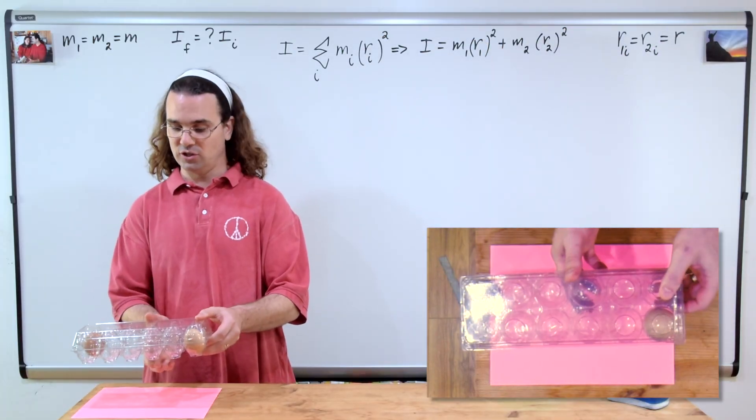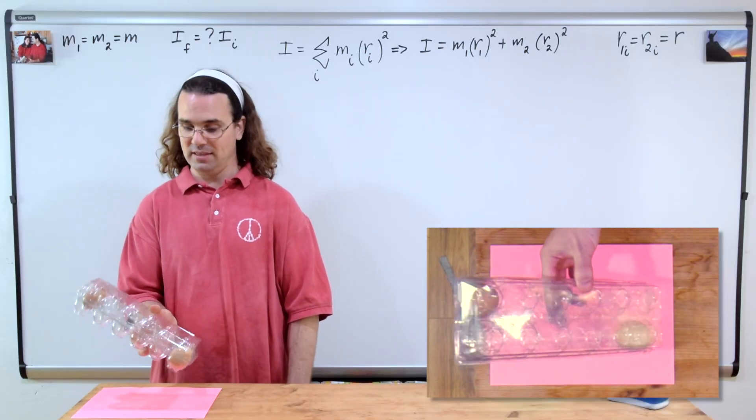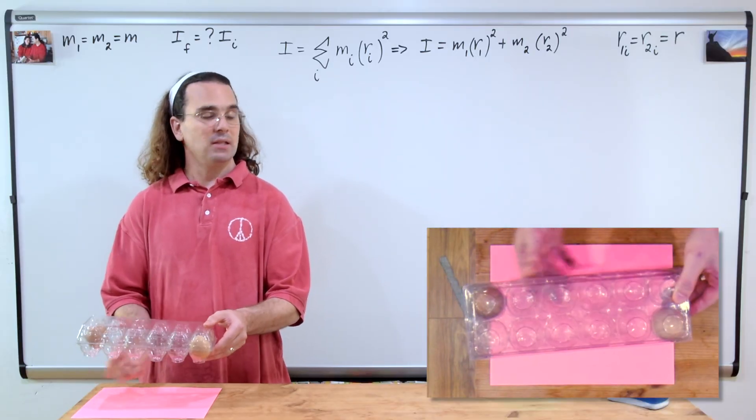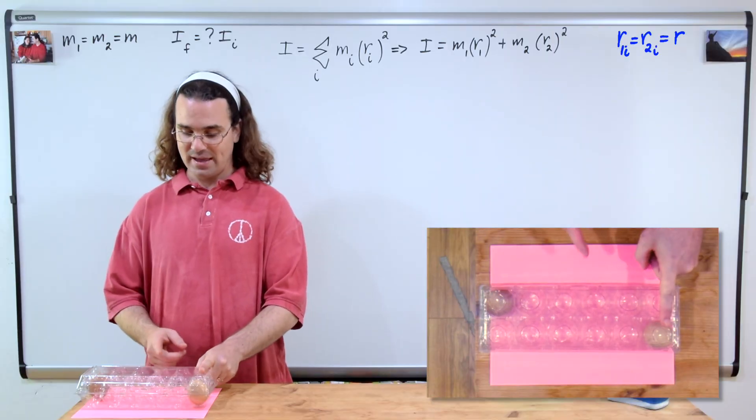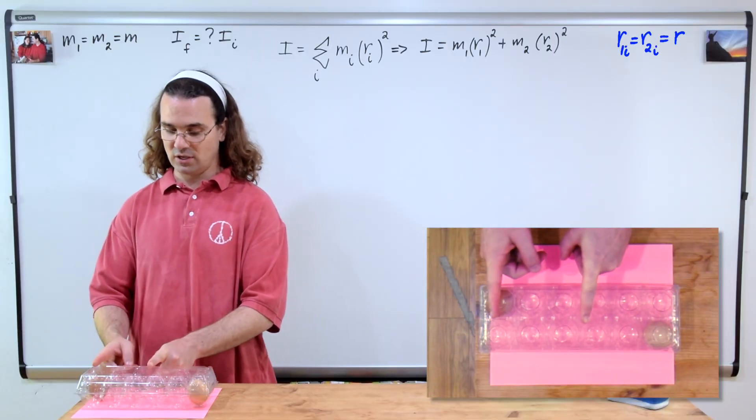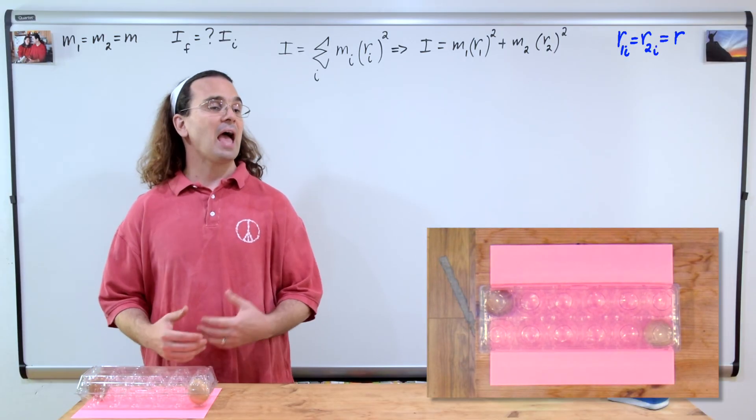Initially, the axis of rotation is directly in the middle of the egg carton. Billy, if we define the distance from the center of mass of the egg to the axis of rotation initially as r, please determine the initial moment of inertia of the system.